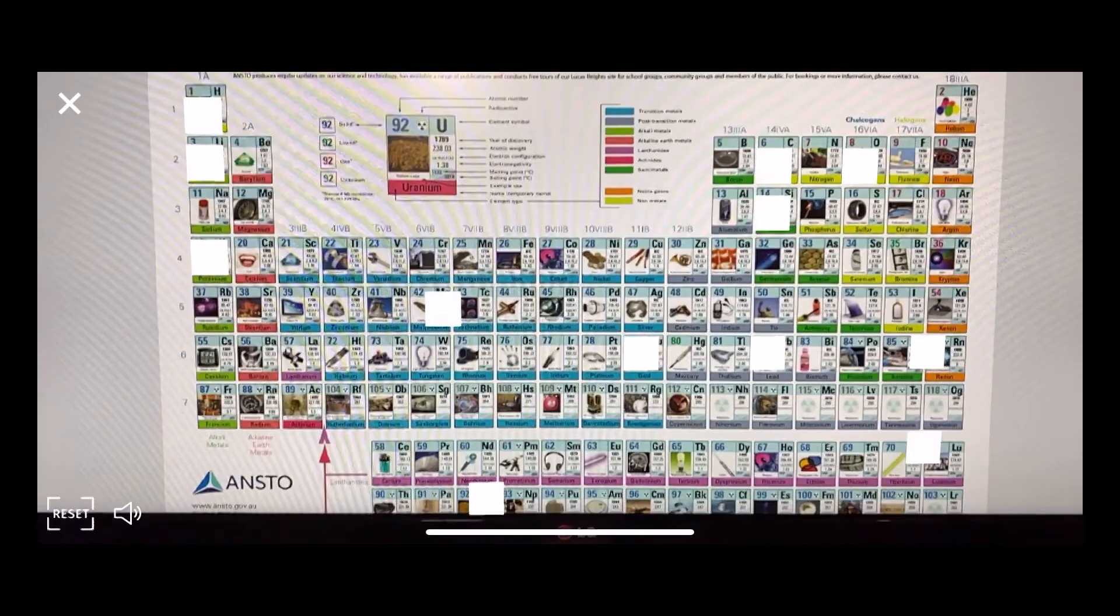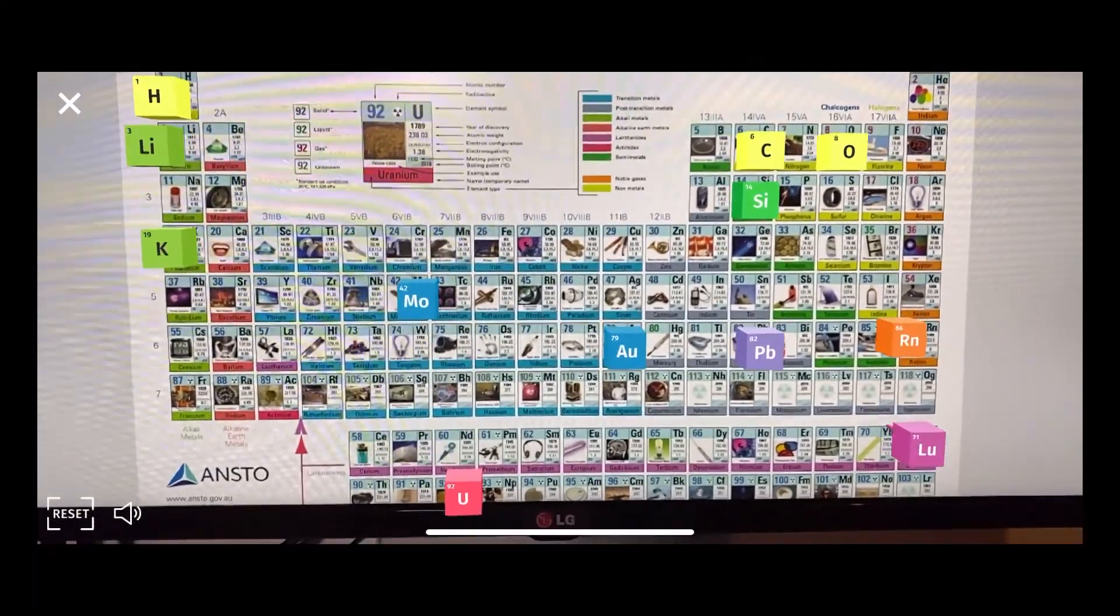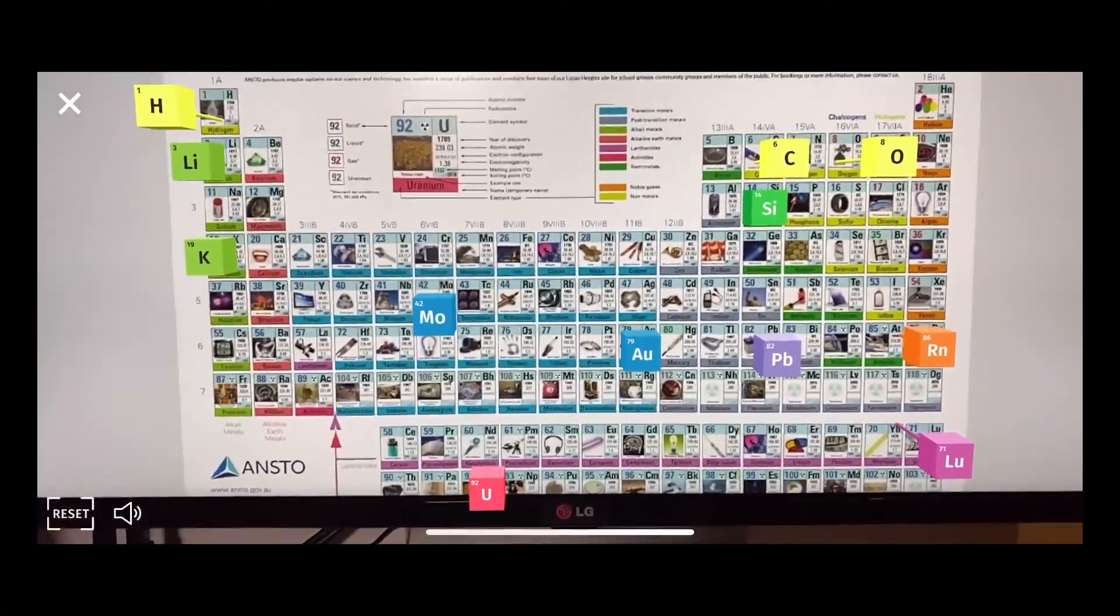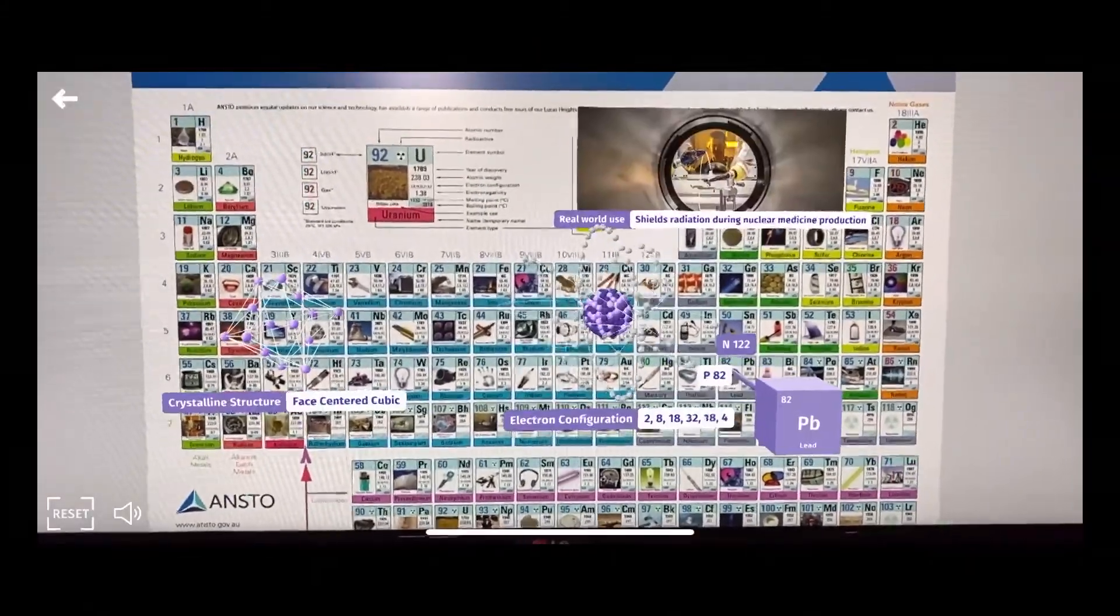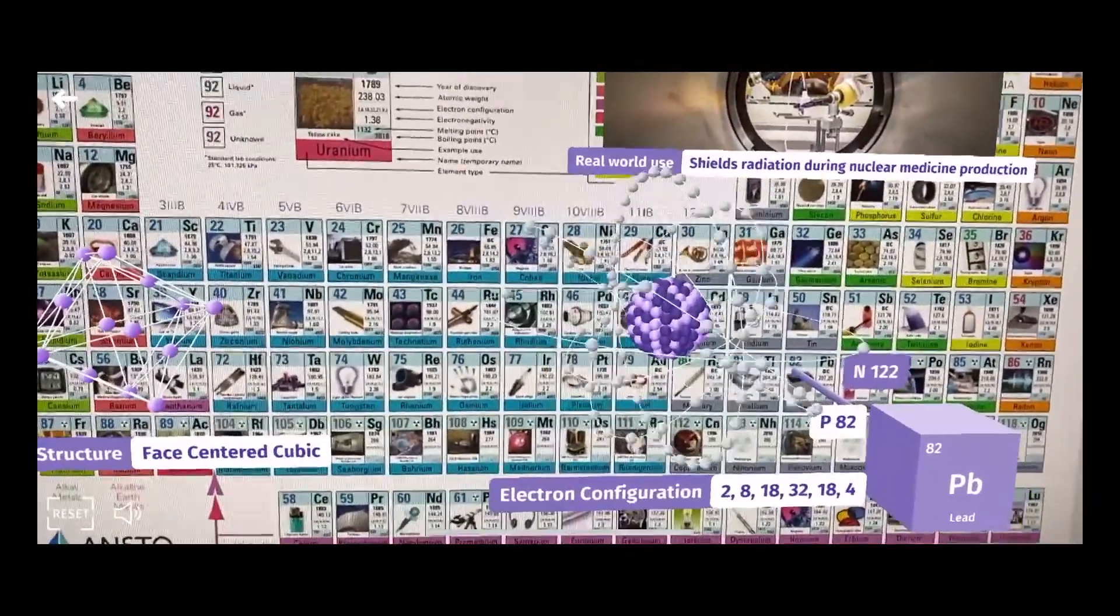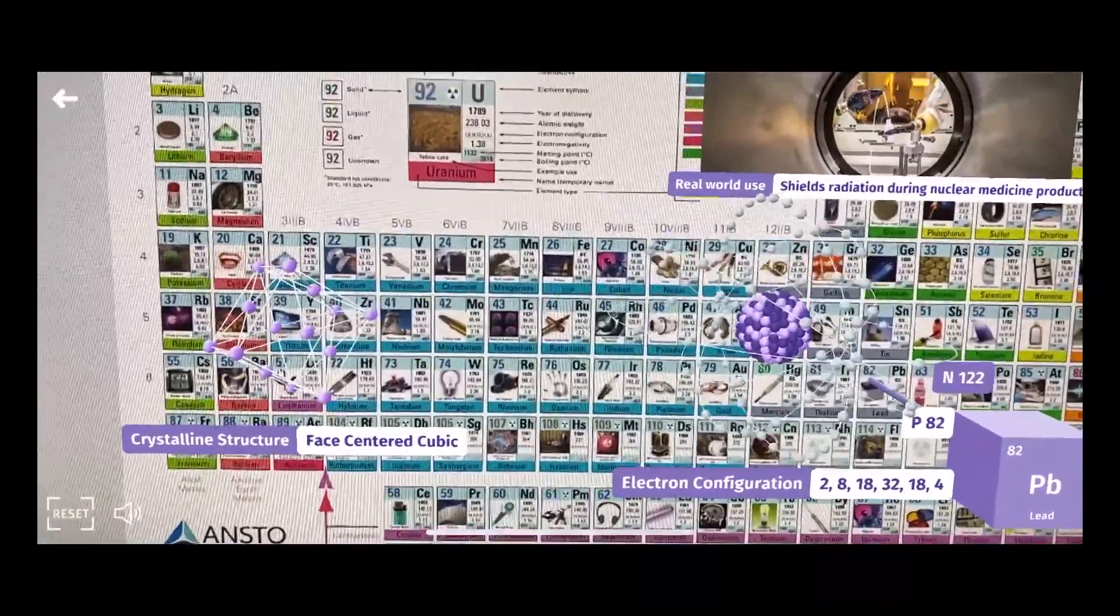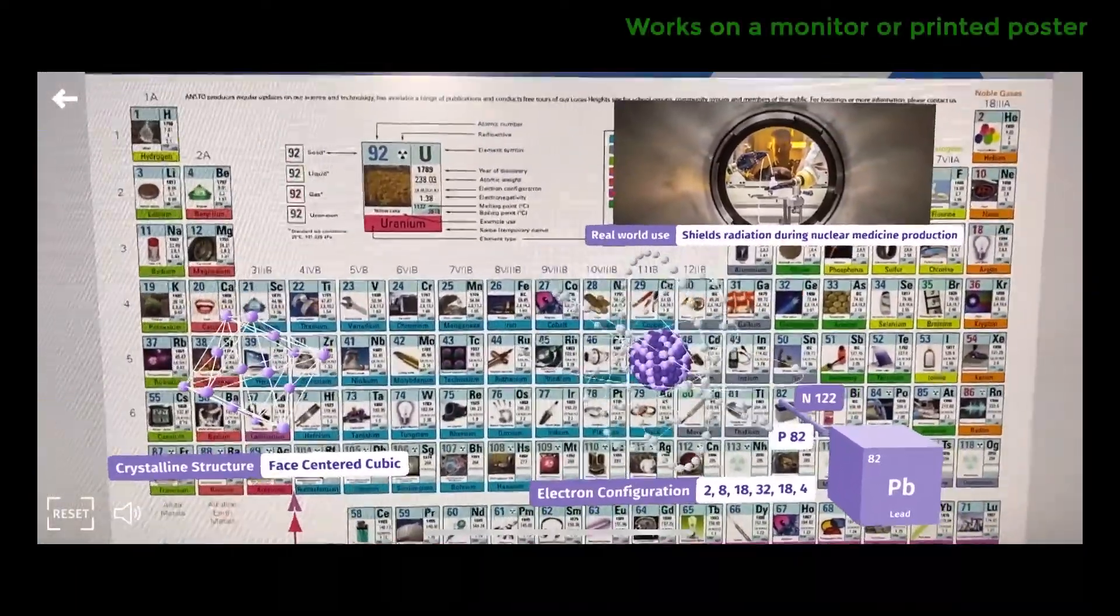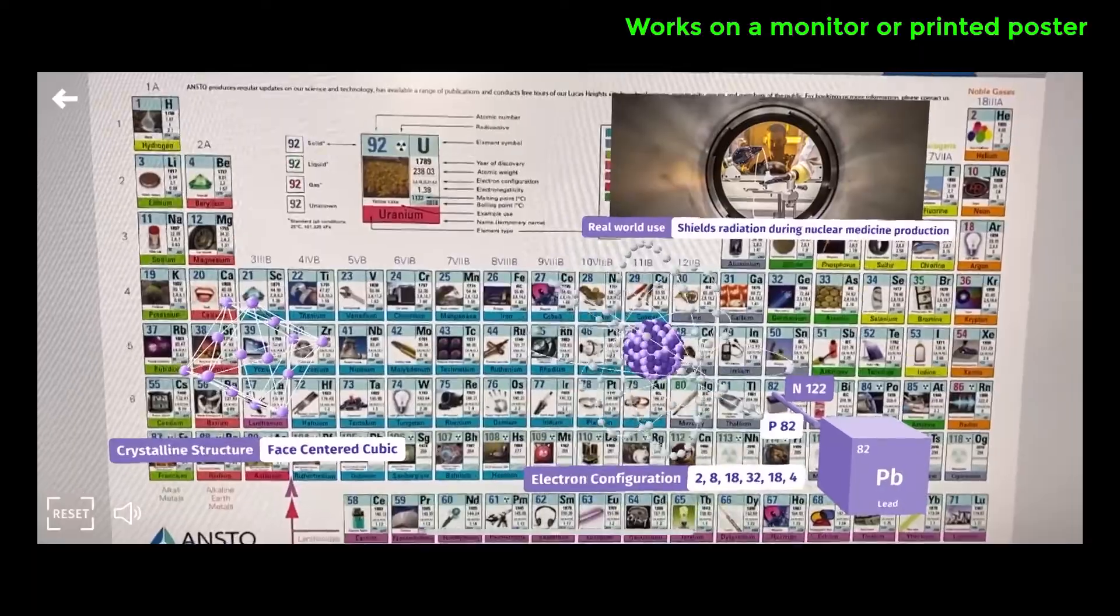Welcome to ANSTO. ANSTO is the premier Australian science organisation that's special. Lead is incredibly dense and a powerful shield for radiation. From this element comes the radioactive isotope lead-210.